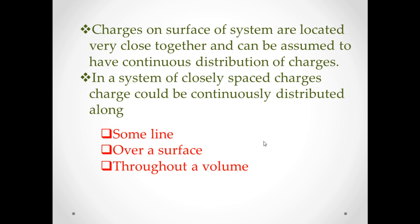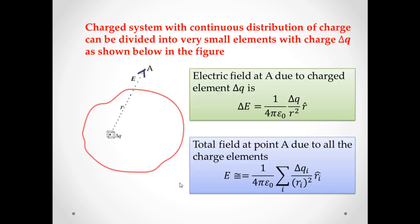To know about continuous distribution of charges, let us assume that charges on a surface are located very close together in such a way that such a system of charges can be assumed to have continuous distribution of charges. In a system of closely spaced charges, total charge could be continuously distributed among some line, over a surface, or throughout a volume.